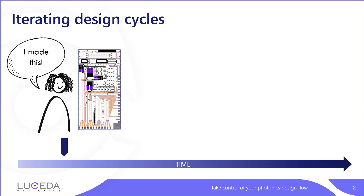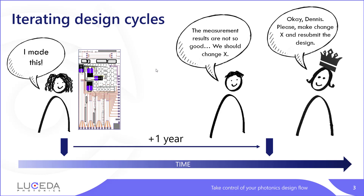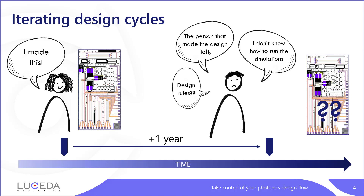Imagine the following situation. A photonics designer designs a beautiful circuit using IPKISS and tapes it out, and about one year later the results came back and it appears that we need a redesign of some elements. The manager asks Dennis, our new designer, to please make the changes and resubmit to the foundry. However, Dennis is not the one that made the original design, so he doesn't know how it was made, what the design rules were, or how the simulations ran. And that person might have left the company. So, will this be a problem?